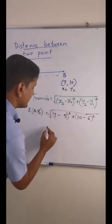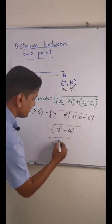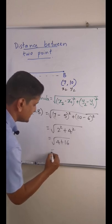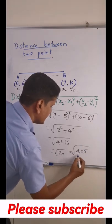Okay, so it will be 2 square and this is 4 square, so it will be 4 plus 16, which is 20. If you want to expand this square root of 20, you can do more: 4 times 5, so...